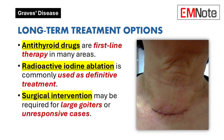Long-Term Treatment Options: For long-term management, antithyroid drugs are often used as first-line therapy in many regions. Radioactive iodine ablation is commonly employed in North America as a definitive treatment for hyperthyroidism due to Graves' disease. Surgical intervention may be necessary for patients who do not respond to medical therapy or who present with large goiters causing compressive symptoms.